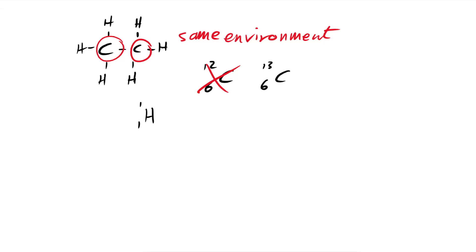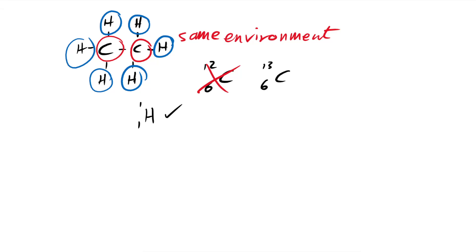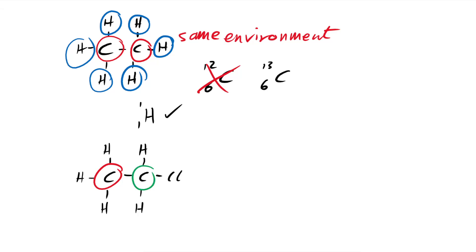Hydrogen is just one proton — that is an odd number of nucleons, therefore it should work. Look at ethane: we can see that all six hydrogens are in the same environment, they're all bonded to a carbon. But the clever thing about NMR is that it doesn't just tell you what something is bonded to — it also tells you what the carbon that the hydrogen is bonded to is itself bonded to. Let's look at chloroethane. We have two carbons, but they're not in the same environment because one is bonded to three hydrogens, but the other is bonded to two hydrogens and a chlorine. So they're going to absorb different frequencies of radio waves, and the same goes for the hydrogens.